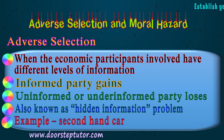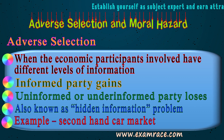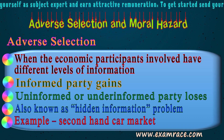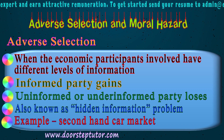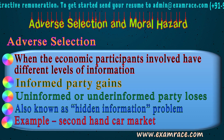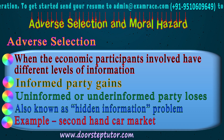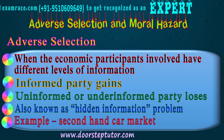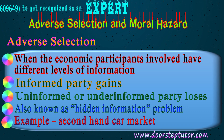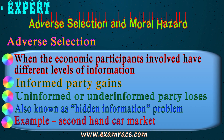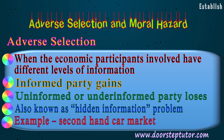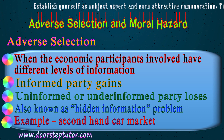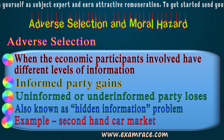For example, in the health insurance market, people who are unhealthy tend to buy health insurance because they know they are more at risk of falling ill. Unhealthy people are much more likely to insure than healthy people. However, insurance companies may not have complete information or full knowledge about the health status of the insured person — they do not know the medical history. People who are more at risk are more likely to buy insurance, and this leads to adverse selection in the health insurance market.